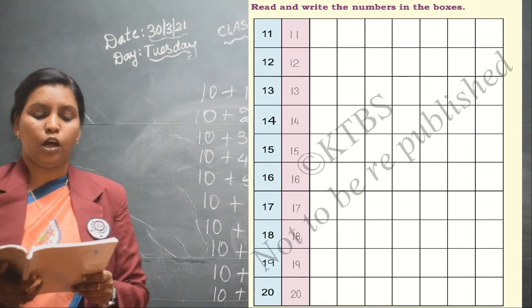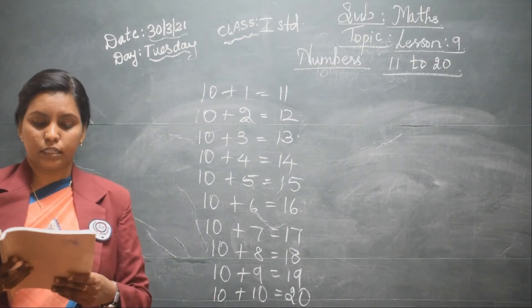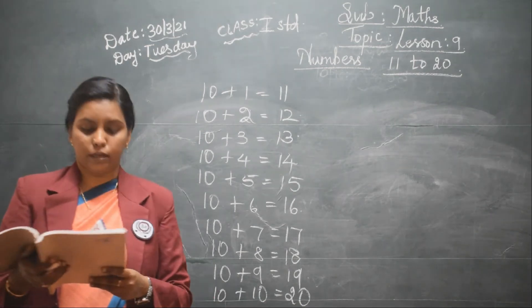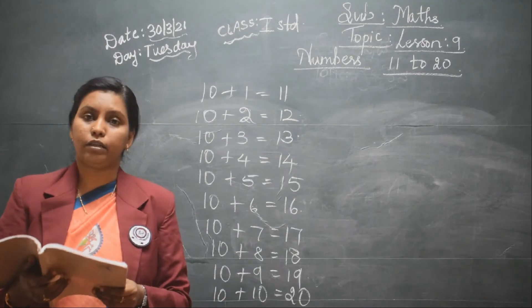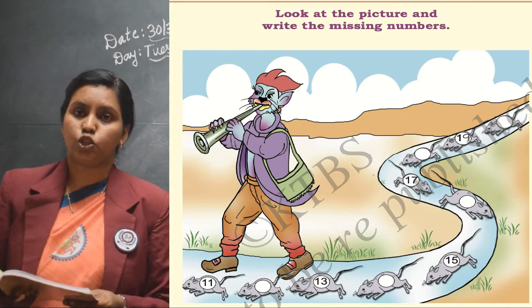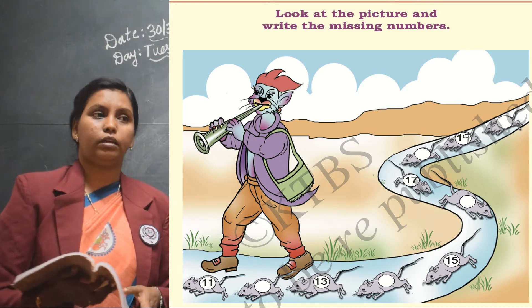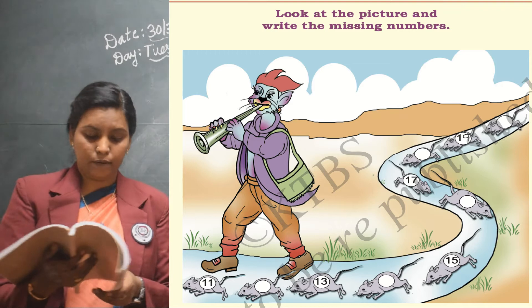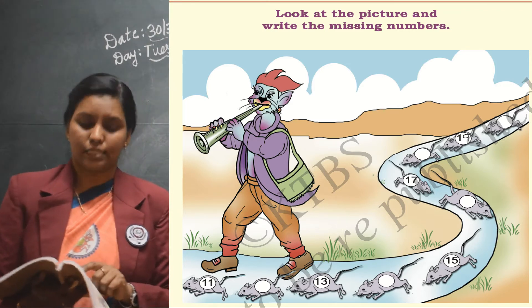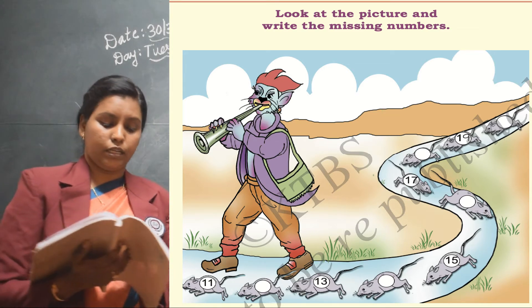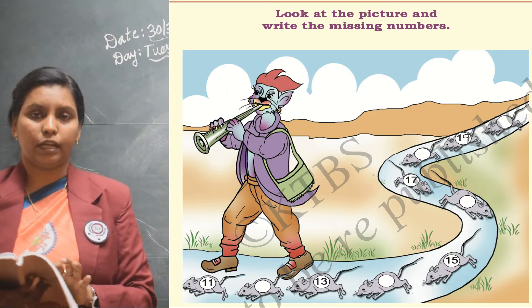On page 110, look at the picture and write the missing numbers. You can see pictures of a rat following a man. The first number given is 11. After 11 comes 12, then 13 is already given, after 13 is 14, after 14 is 15, then the missing number is 16, then 17 is given, after 17 you have to write 18, after 18 is 19.